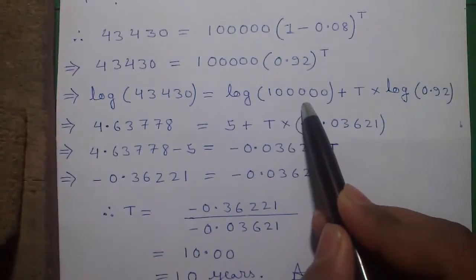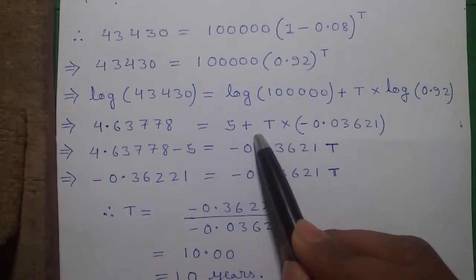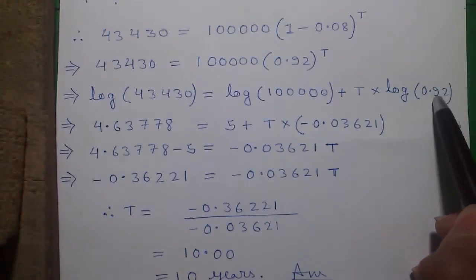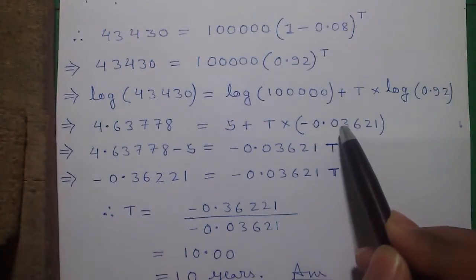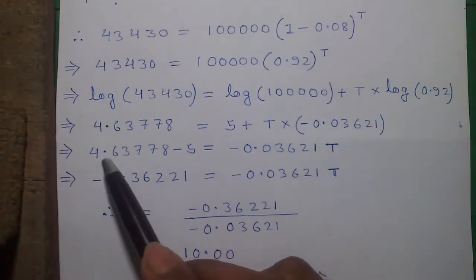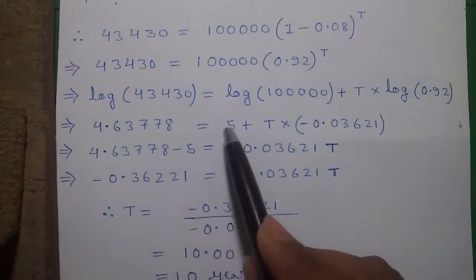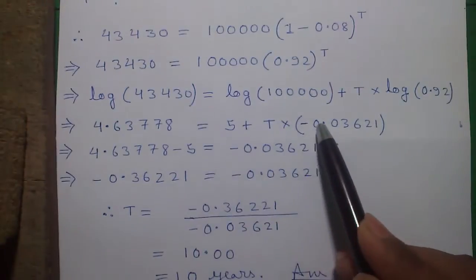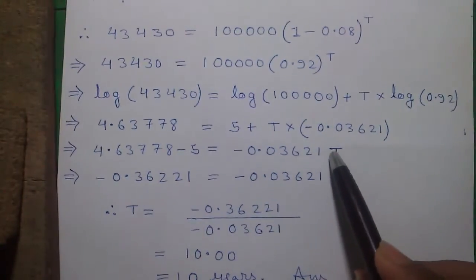Similarly, log of 1 lakh is 5 plus T into log of 0.92 is minus 0.03621. So 4.63778 minus 5 equals to minus 0.03621 T.